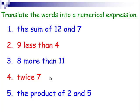You may want to pause the video and try these and see if you could get these correct. The sum of twelve and seven, that would be twelve plus seven. Nine less than four, that would be four minus nine. Eight more than eleven, eleven plus eight.